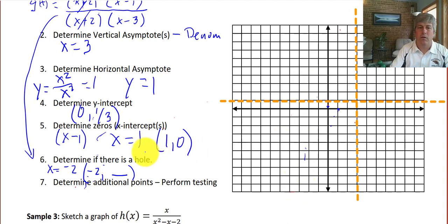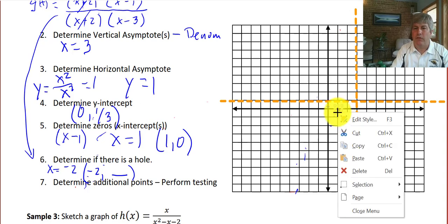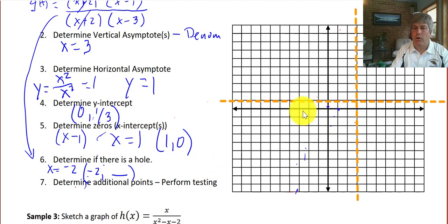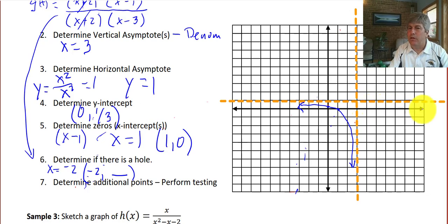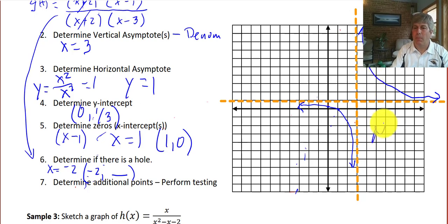Before we do any testing, let's use our logic. We have a y-intercept and a single-root x-intercept, so that's going to be a pass-through x-intercept. We know about our asymptotic behavior, so our graph in the lower left has to pass through those points and will look something like that. Since this is a function, we're not going to have anything above that. Going to the right side of our vertical asymptote, we don't have any bridges or x-intercepts there, so there's no way to get across that x-axis. So we can just sketch the rest of our graph in the upper right-hand side — no bridges, no way across the x-axis, no graph down there. No need to test.